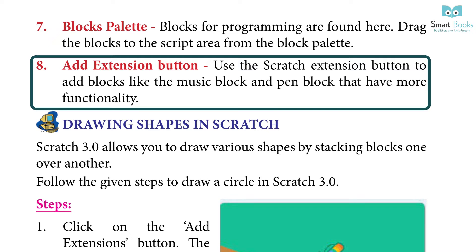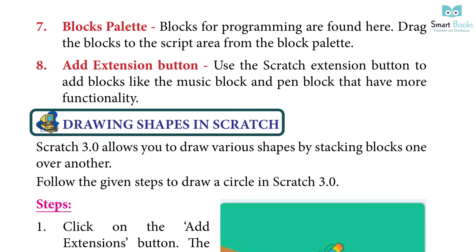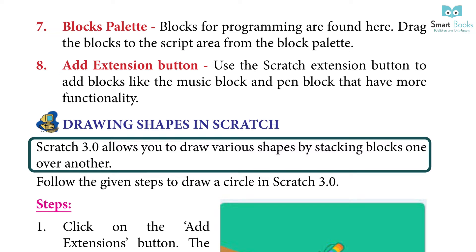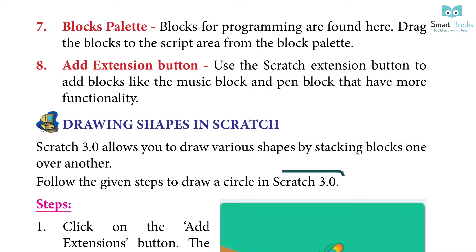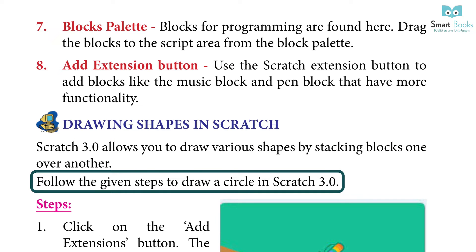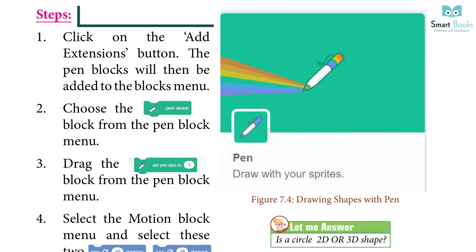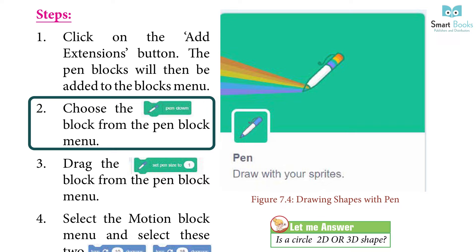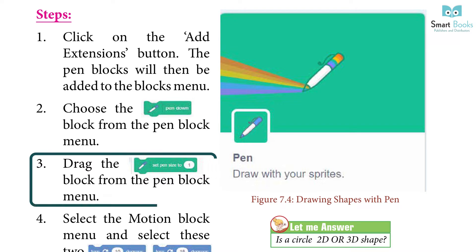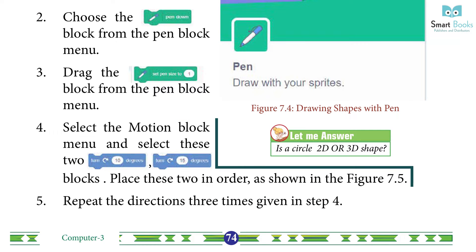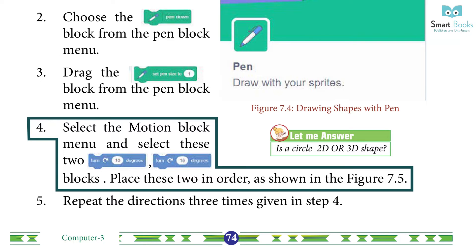Drawing shapes in Scratch: Scratch 3.0 allows you to draw various shapes by stacking blocks one over another. Follow the given steps to draw a circle in Scratch 3.0. Step 1 — click on the Add Extensions button; the pen blocks will then be added to the block menu. Step 2 — choose the pen down block from the pen block menu. Step 3 — drag the block from the pen block menu.